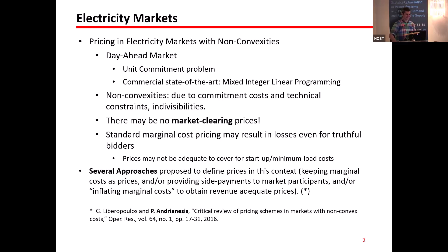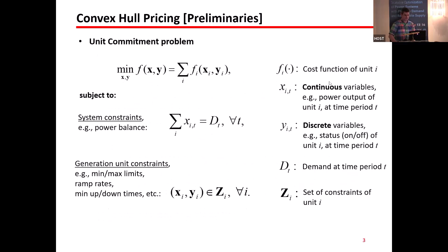Some approaches keep marginal cost prices and try to provide side payments, inflate the prices, or eliminate side payments to solve the issue. That was something we discussed in Atlanta six years ago. This presentation is about convex hull pricing, which has been considered as an ideal solution to the problem. Let's see why and how this can be supported by the method we use to compute the prices.